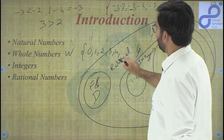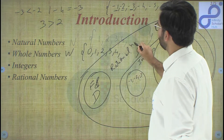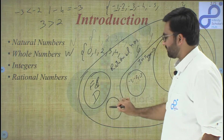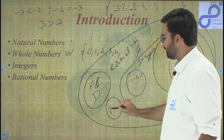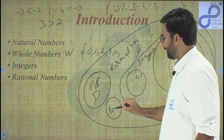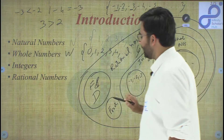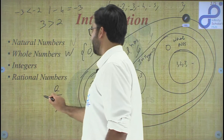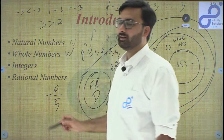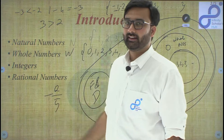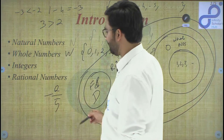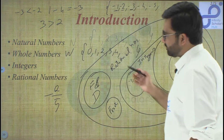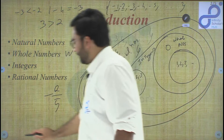These are rational numbers. Note that negative fractions are also included — for example, two upon five with a negative sign is a negative fraction, and it is still a rational number.